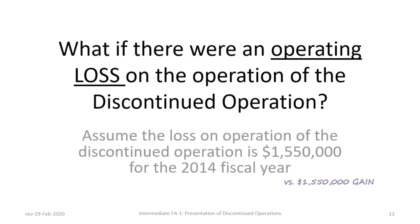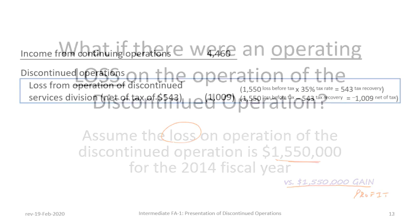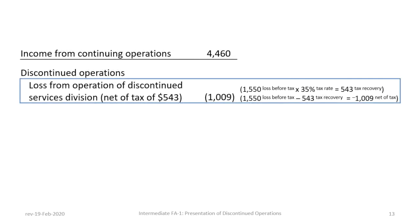Our work so far presumes that there was an operating profit on the discontinued operation, but what if there was an operating loss? We will now assume that instead of an operating profit of $1,500,000 from continuing to operate the DO, we incur a $1.5 million loss and see how this changes our presentation. The approach is identical to the previous model, except that the division incurred an operating loss of $1.55 million rather than a profit in the fiscal year.